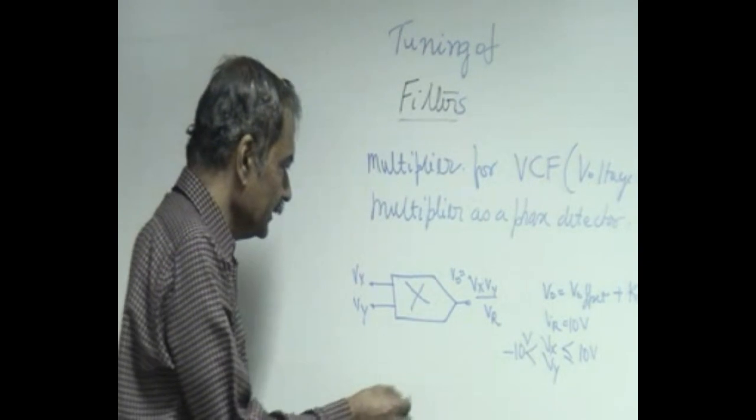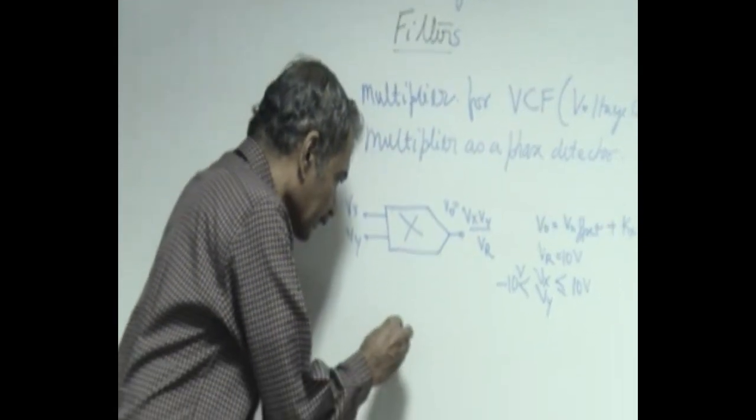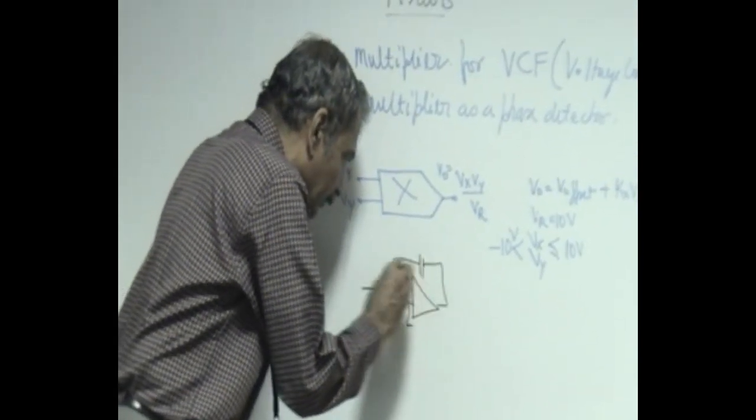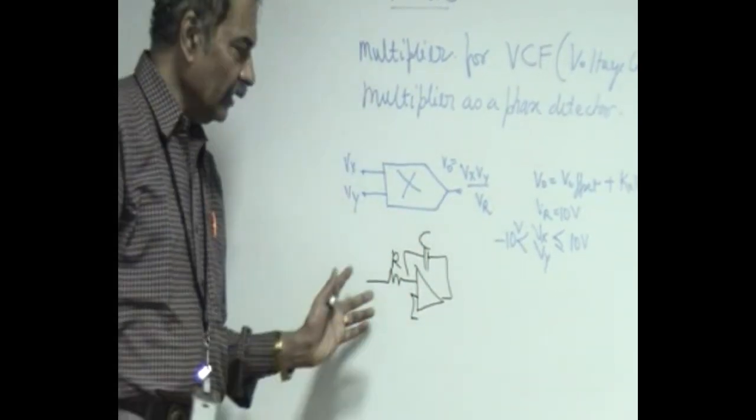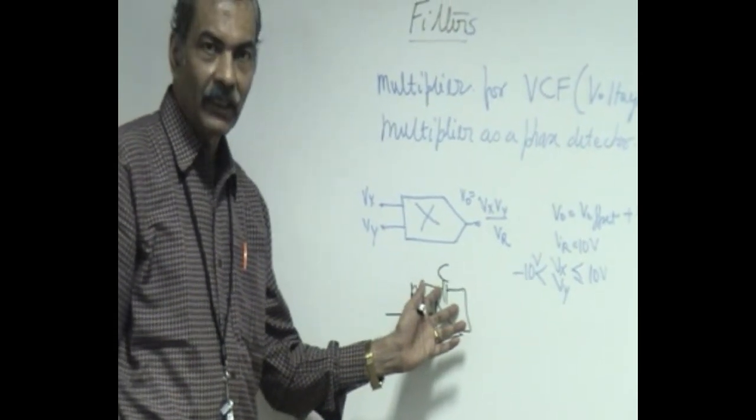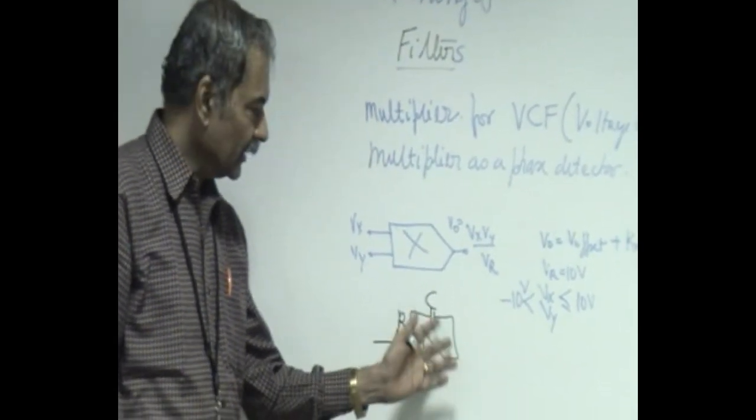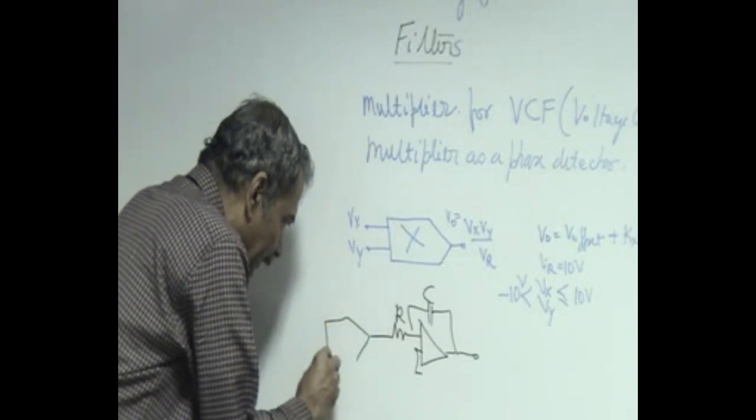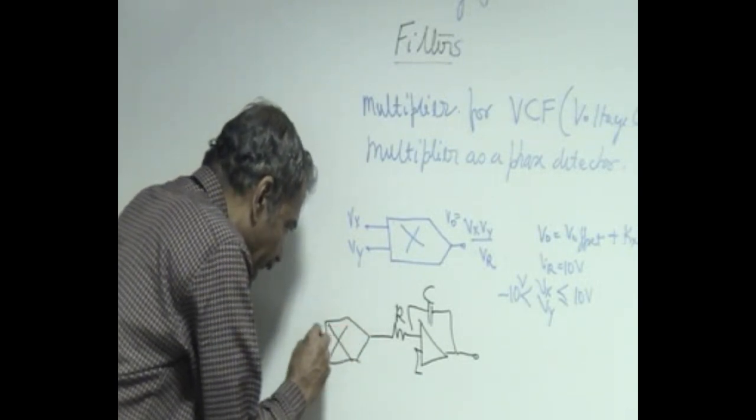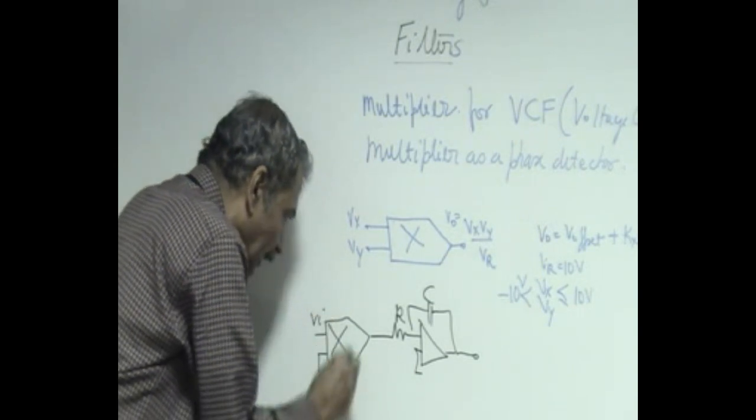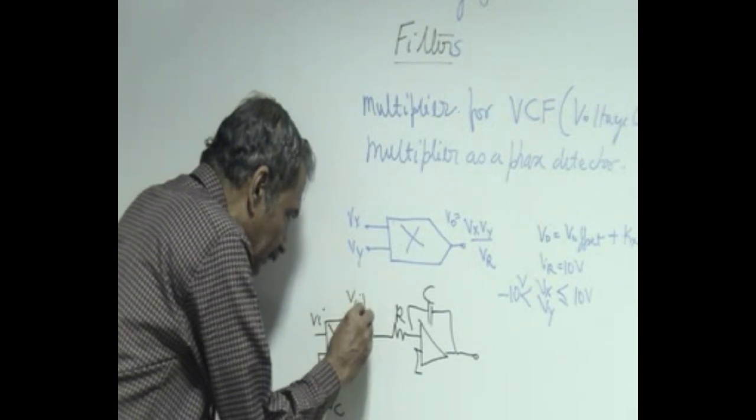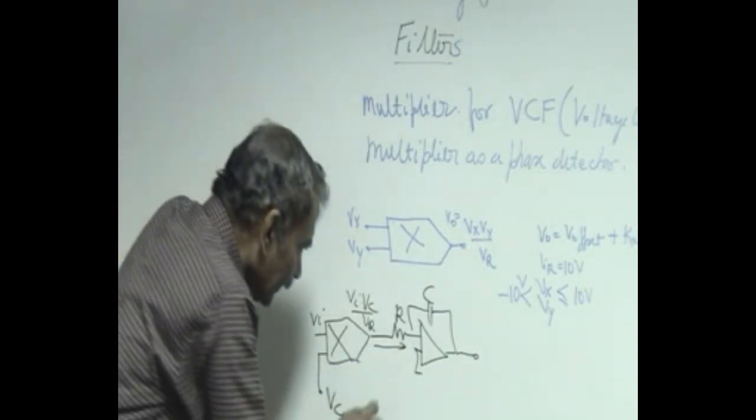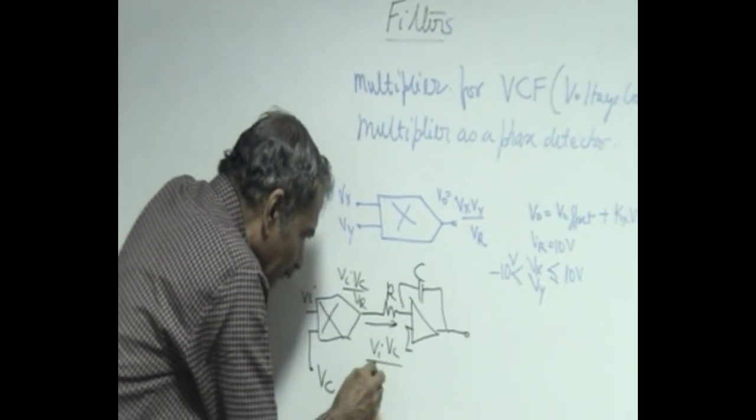Now, how do we use this? First as a voltage control filter for converting a filter into voltage control. The integrator of the previous section which was having a current of v_i by r going through the capacitor and producing a voltage v_i by r times sc with a negative sign here that current is changed based on the multiplier output. So, this v_i is applied here and this is the control voltage. Now, this voltage becomes v_i times v_c by v_r according to what we have written there and therefore, the current in this which was v_i by r changes to v_i times v_c by r times v_r.